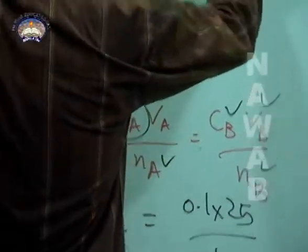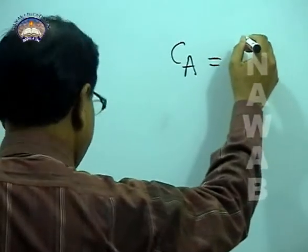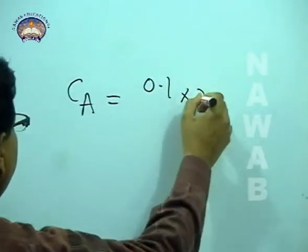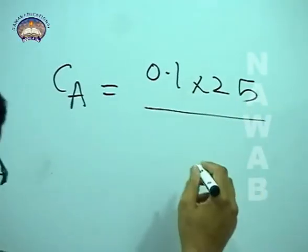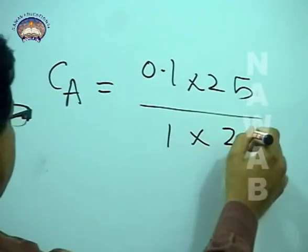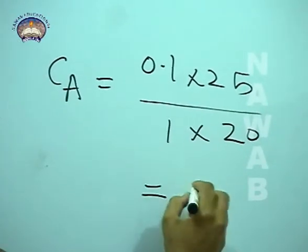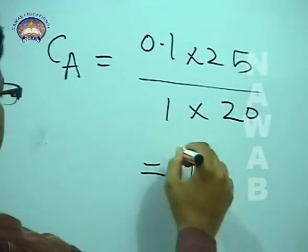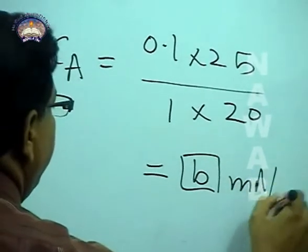When you put all these things over there, concentration of acid will be equal to 0.1 into 25 over 1, and 20 will go there. So concentration will be equal to 0.125 mole per decimetre cube.